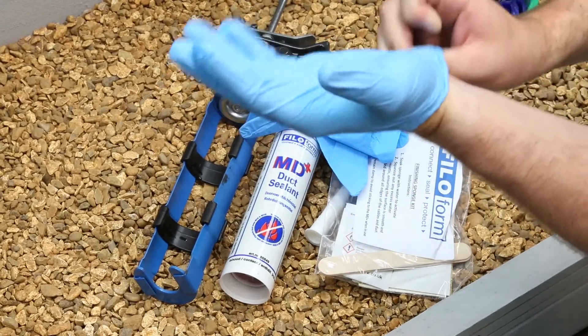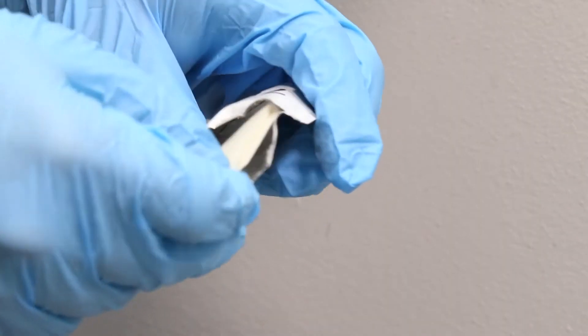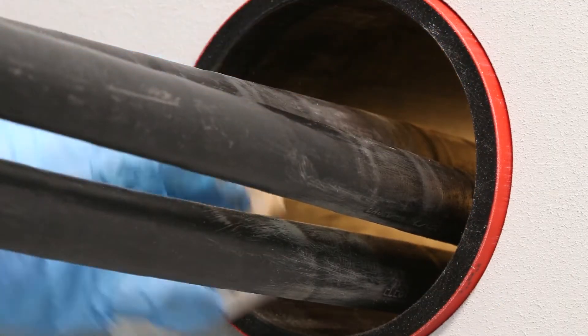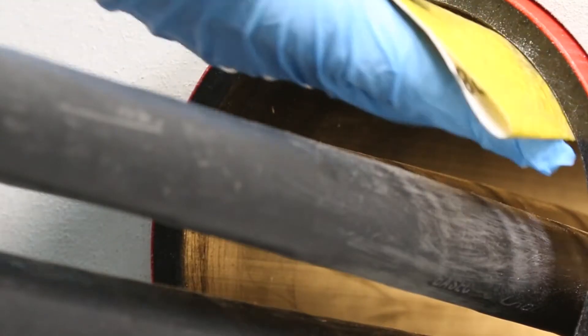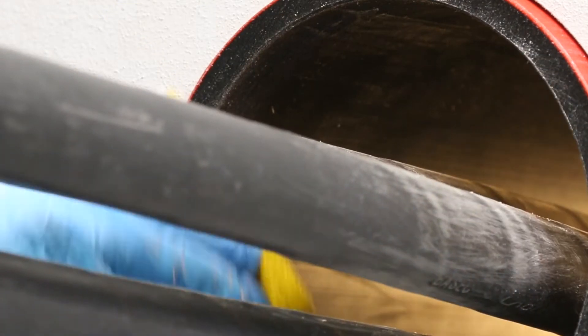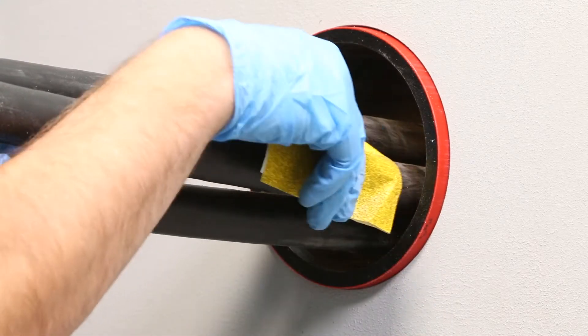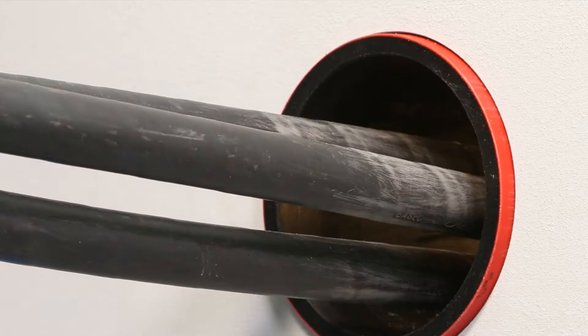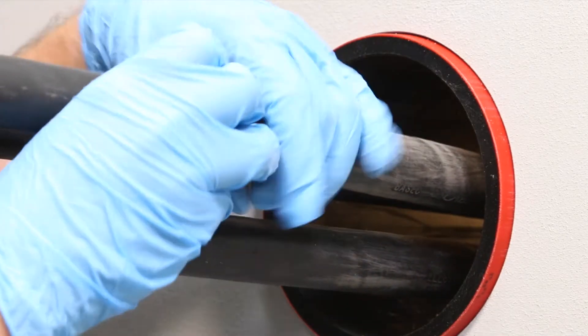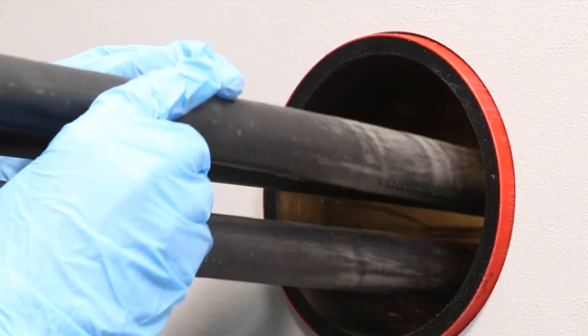The duct and cables or pipes to be sealed must be both clean and dry. Clean and abrade the first 25mm of the cable and 20mm of the inside duct surface. Separate the cables or pipes by at least 5mm from each other and the duct edge.